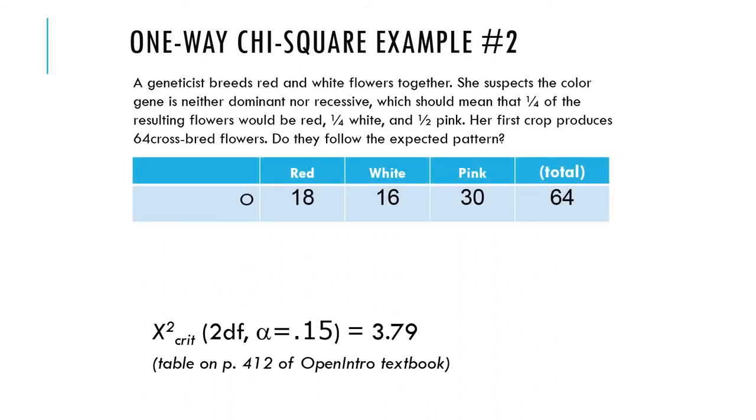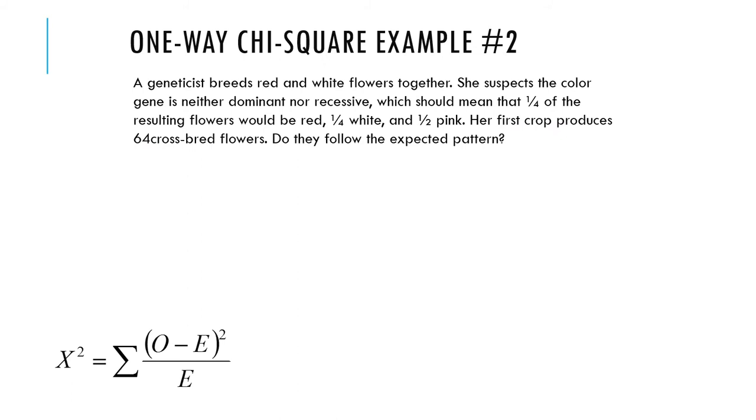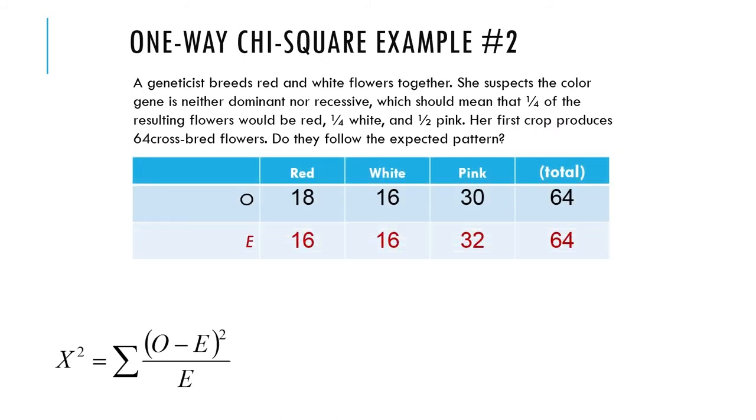This is what she gets. From 64 flowers, she gets 18, 16, and 30. The null hypothesis said it should be one-fourth, one-fourth, and one-half red, white, and pink. So the expected values would be 16, 16, and 32. The observed values are pretty close. There's not much deviation there. It's really close. It's easy to calculate the expected values. If you had grown 64 flowers and half of them were pink and a quarter were red and a quarter were white, then it would have to be 16, 16, and 32 like this.